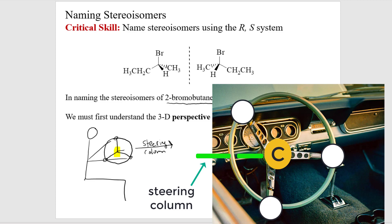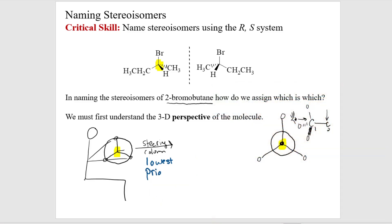That is the right perspective. I want you to view the molecule at the stereocenter with that chiral carbon in the middle, looking at three of its bonds, with the lowest priority group being the steering column — going away from you. Put the steering column away from you and you'll be in the driver's seat. You don't want to be the one where the steering column is coming at you — that means you're getting run over by the car.